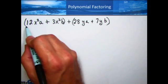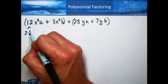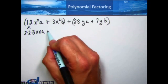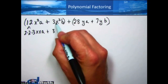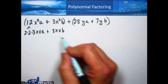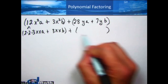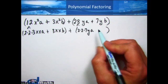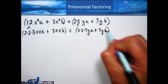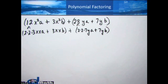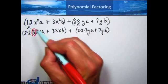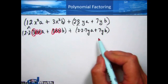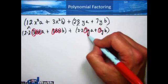We've grouped the terms and confirmed the plus sign is in the middle. Now let's factor: 12 is 2 times 2 times 3, and x squared is x times x, and we have an a. Plus 3 is just 3, with x times x and a b. For the second group: 28 is 2 times 2 times 7, with y, plus 7y and b. In the first set, what they have in common is a 3 and two x's. In the second set, they both have a 7 and a y.